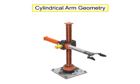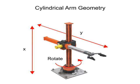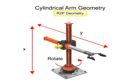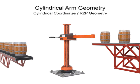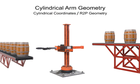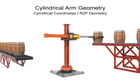Cylindrical arm geometry robots move linearly in two directions and rotate in one other. Since this type of robotic arm moves in two separate prismatic or linear directions and rotates in one direction, it's given the designation of R2P, where the R stands for rotational. This type of robotic arm is most often used in machine-tending, assembly, material handling, and palletizing operations.